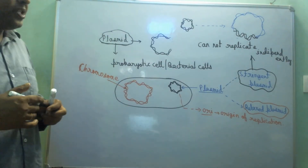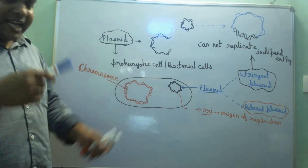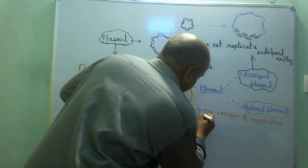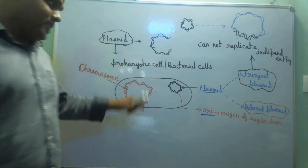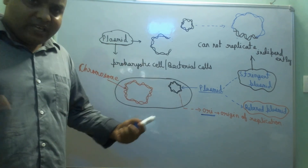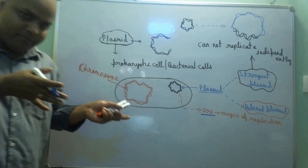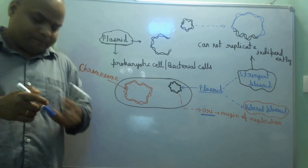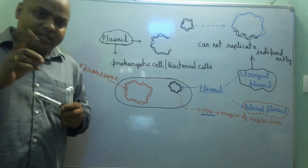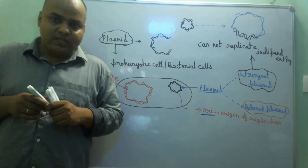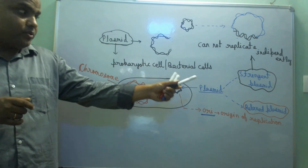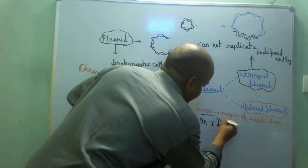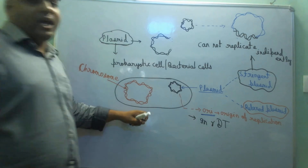Our stringent plasmid cannot replicate independently. But if you look at our relaxed plasmid, it can replicate independently. Why? Because it has its own origin of replication. Since it has its own origin of replication, it is relaxed — it does not need to integrate into the main chromosome. It can replicate by itself. In recombinant DNA technology, the plasmid we use is actually the relaxed plasmid.